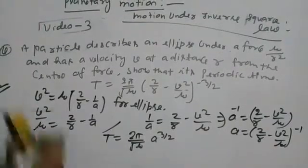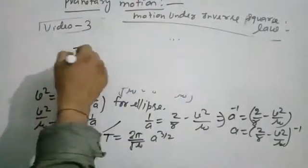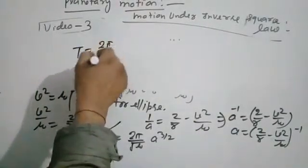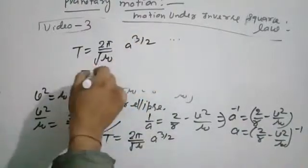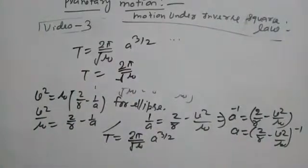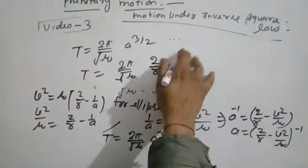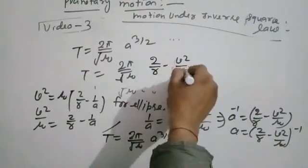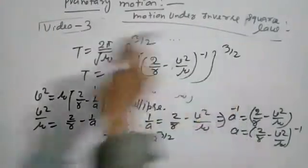T = 2π/√μ × a^(3/2). Substituting the value of a = (2/r - v²/μ)^(-1), raised to the power 3/2.